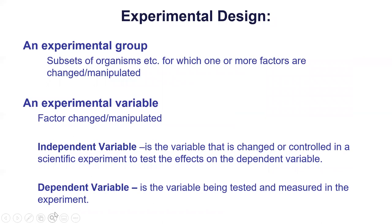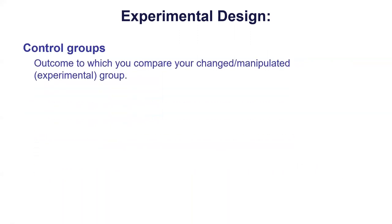Usually you're going to have a couple of variables. One variable that you as the experimenter are changing — we call that the independent variable. In the case of coffee, that's giving people coffee, or not giving them coffee, or how much coffee to give them. This is the thing that is controlled — sometimes people call it the control variable. The dependent variable, or responding variable, is the thing that is going to be measured — in this case, the blood pressure.